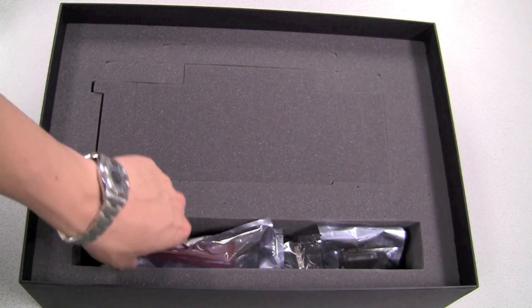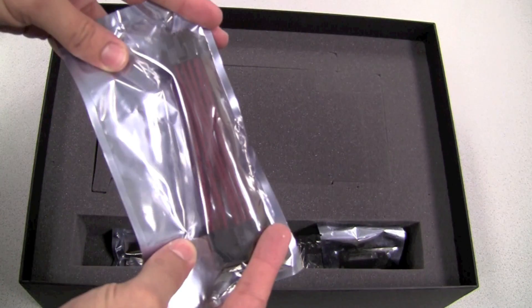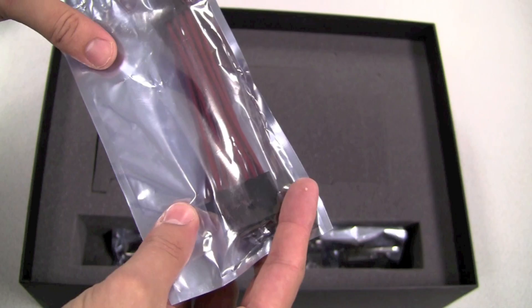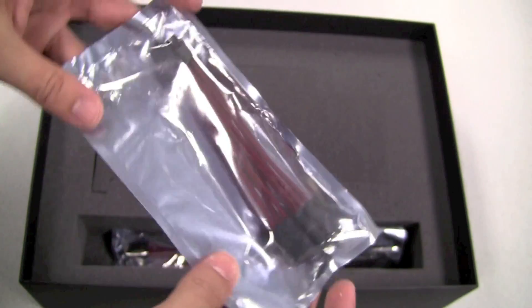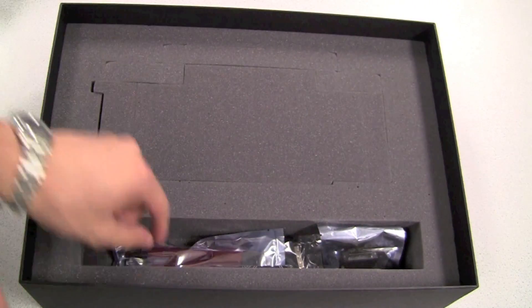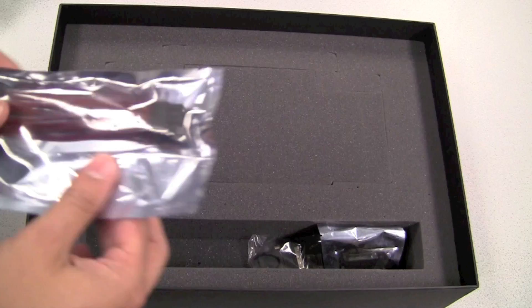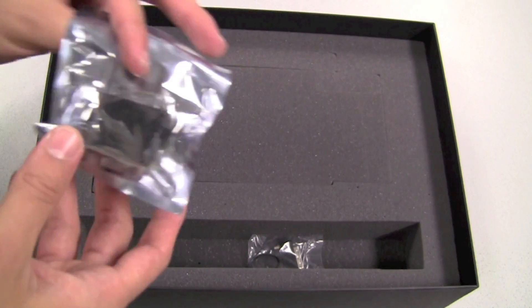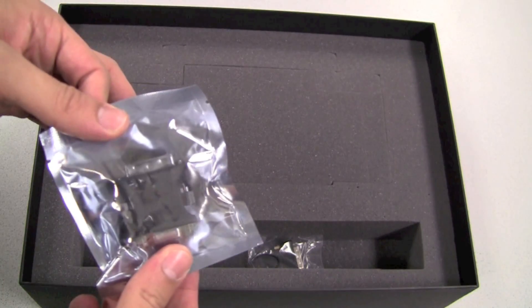Alright, so let's see what else we have in the box here. This is a dual 6-pin to 8-pin power converter. EVGA is using a new version that has sleeving on each individual wire. There are actually two of these. Also we have a DVI to VGA adapter.